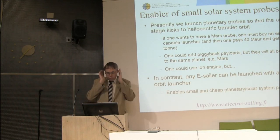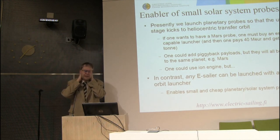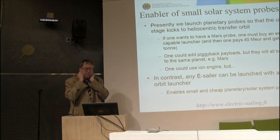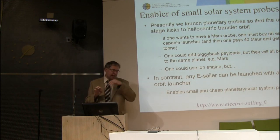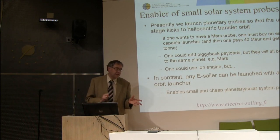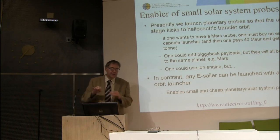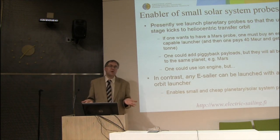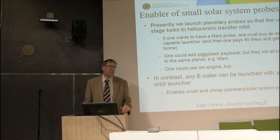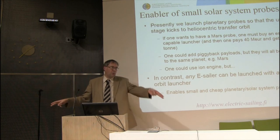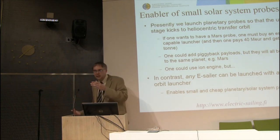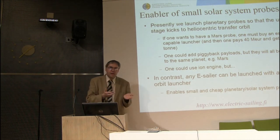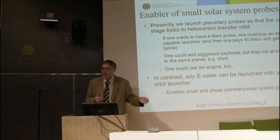The E-sail would also be enabling technology for small solar system probes, since it can be launched into interplanetary space by any escape orbit launcher regardless of direction. Once in the solar wind, the E-sail takes over and delivers the payload to the destination. This means multiple probes could be launched by the same rocket to completely different targets — one to Jupiter, another elsewhere — unlike current chemical launches where all piggyback payloads must go to the same planet.